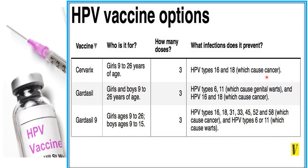Cervarix gives protection against Human Papilloma Virus infection and the cancer caused by HPV types 16 and 18. Another vaccine, Gardasil, is given to both girls and boys between 9 to 26 years of age in three doses. It gives protection against HPV types 6 and 11, which cause genital warts, and also against HPV types 16 and 18, which cause cancer.